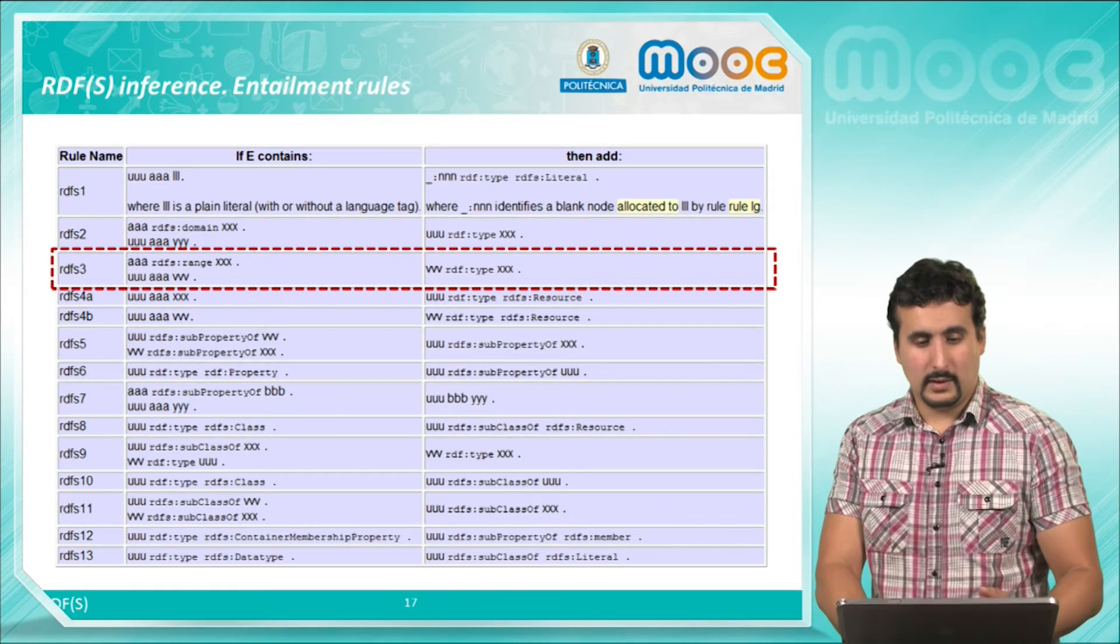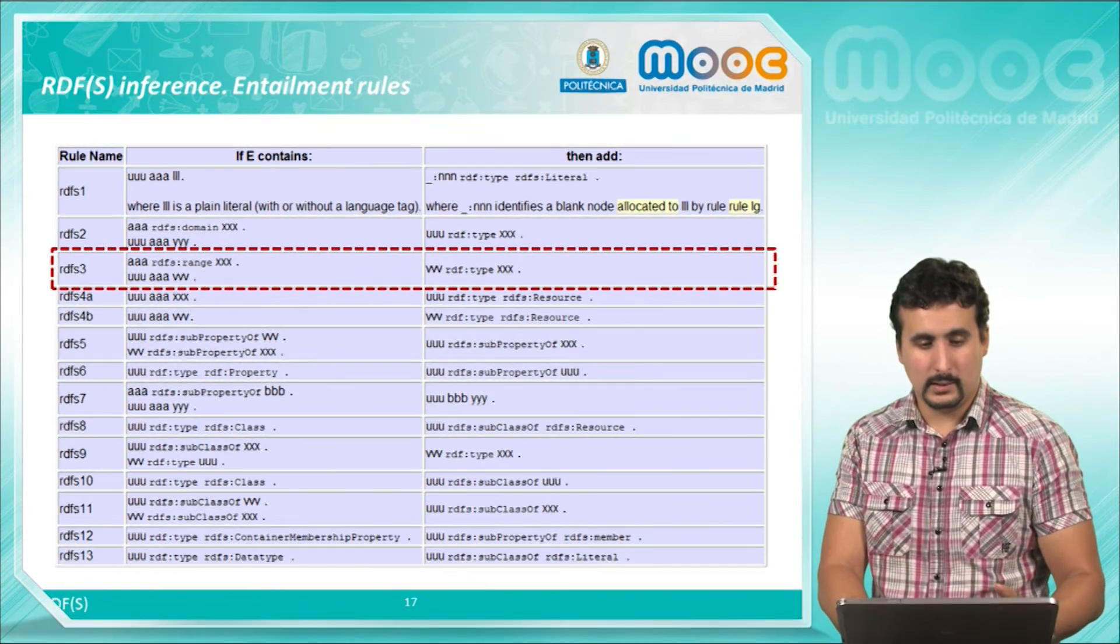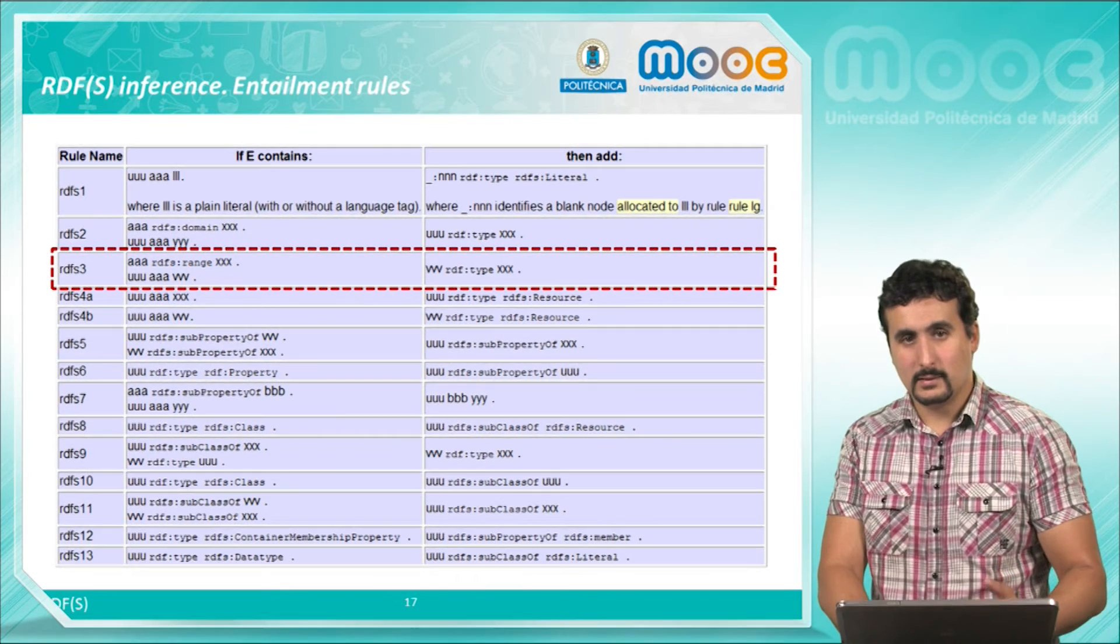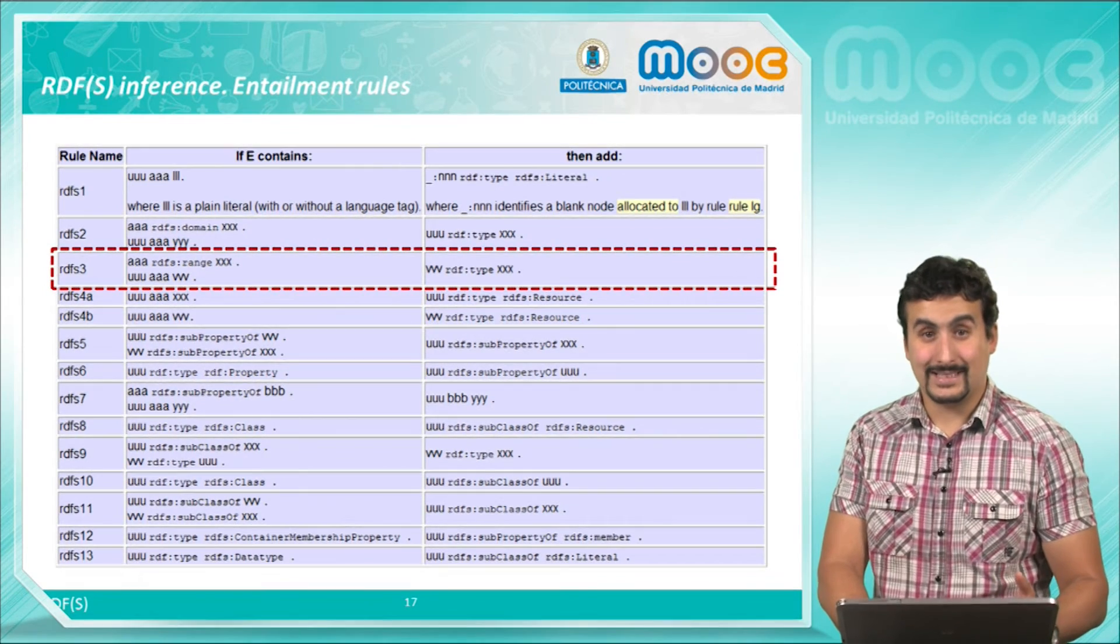In this case RDFS3 rule states that if a property A has a range X and there is a triple UAB, then V must be of type X.